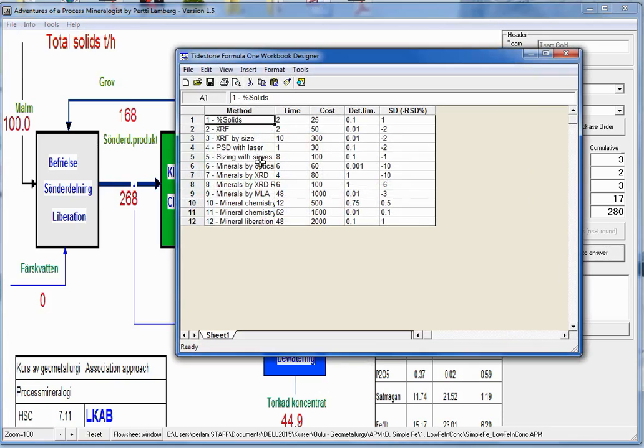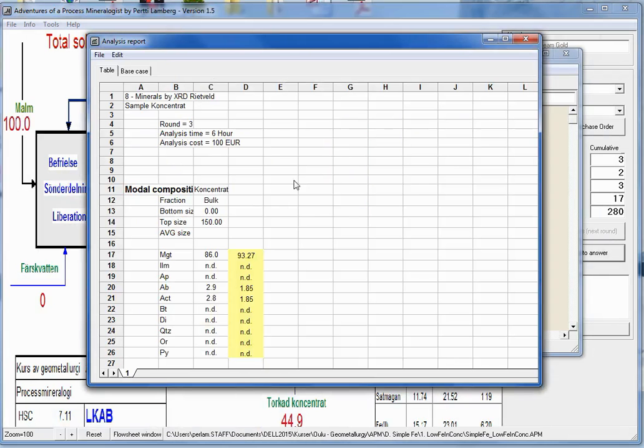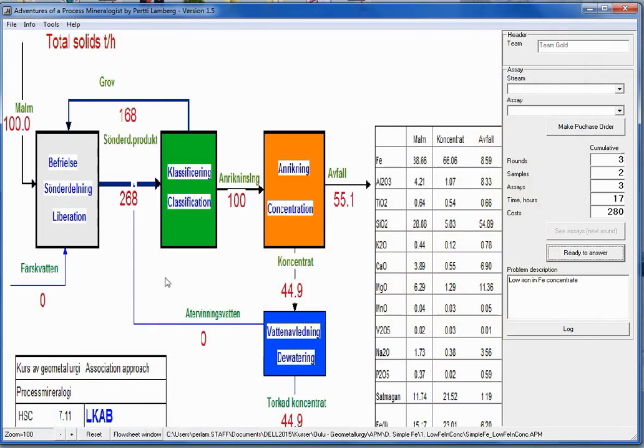So let's look how this Rietveld. So minerals with XRD Rietveld. Detection limit 1%. And it's relative standard deviation 6%. So back to here. The difference here is bigger.